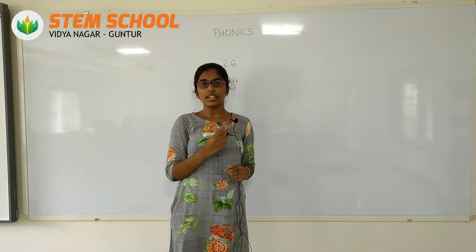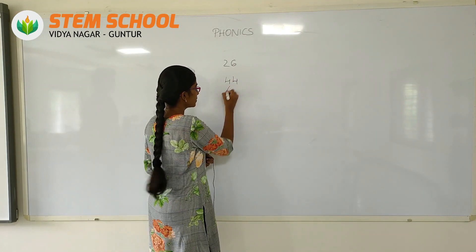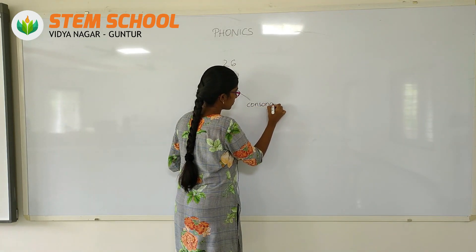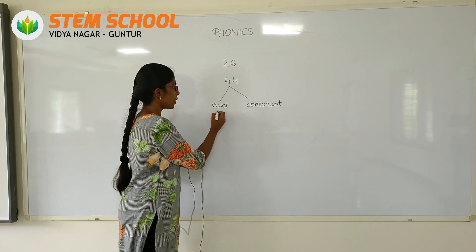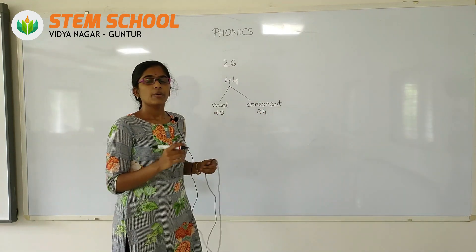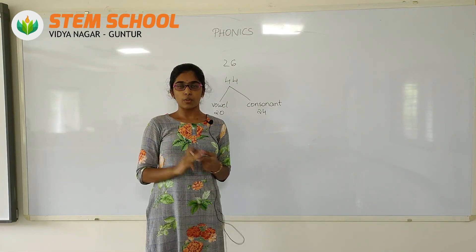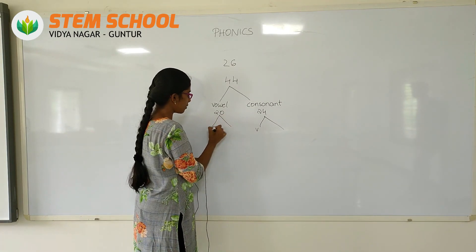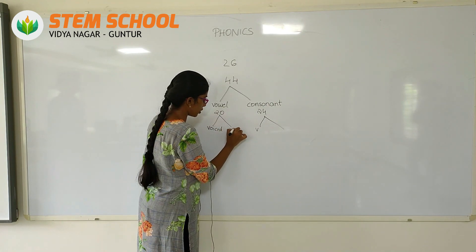The 44 sounds are divided into two parts: vowel sounds and consonant sounds. 20 are vowel sounds and 24 are consonant sounds. Again, we have two types of sounds: voiced sounds and unvoiced sounds. In these 20 vowel sounds, we have two types — voiced and unvoiced.